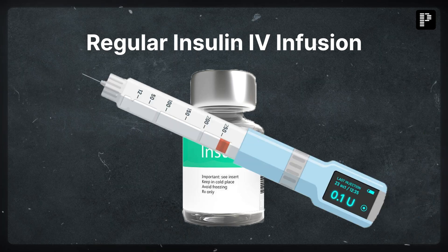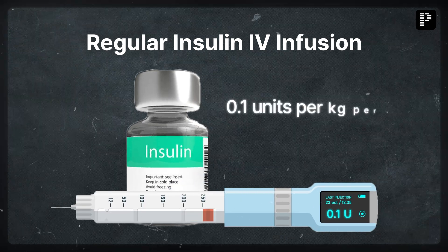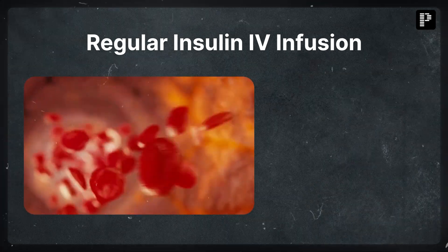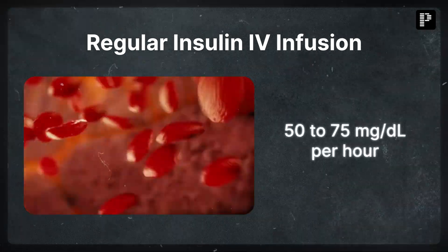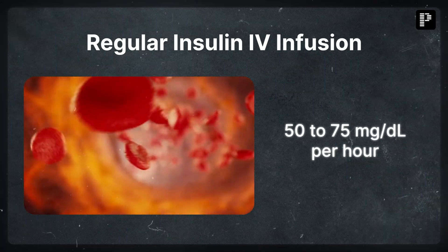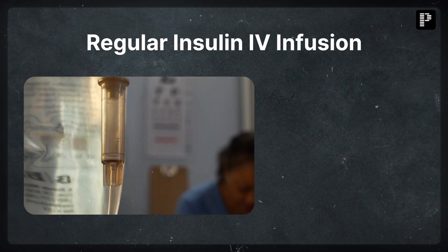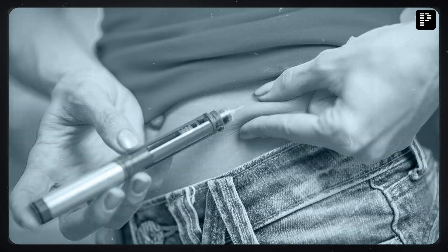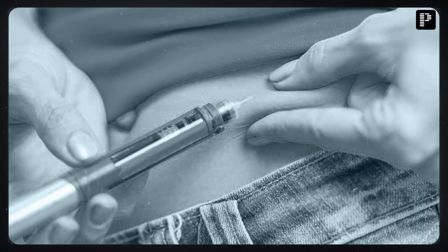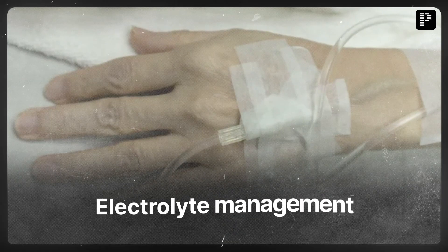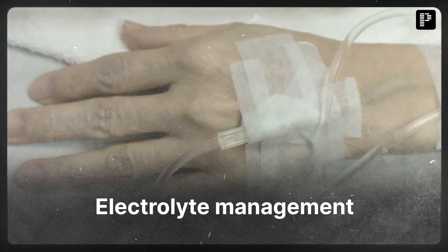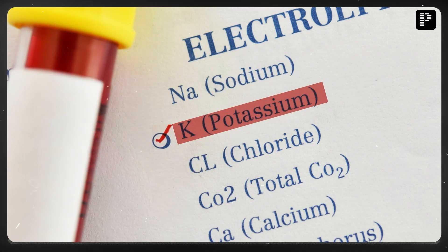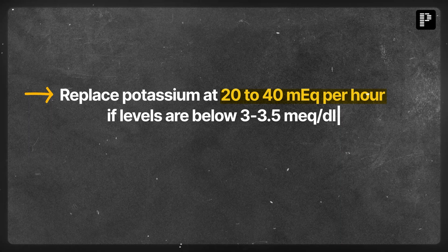Next, initiate insulin therapy. Use regular insulin IV infusion with an initial dose of 0.1 units per kilogram per hour. The aim is to reduce blood glucose by 50 to 75 milligrams per deciliter per hour. If glucose levels are higher than 400 milligrams per deciliter, consider giving an additional insulin bolus.